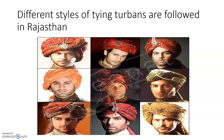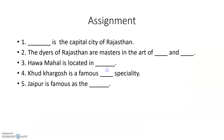Now, a small assignment for you. Dash is the capital city of Rajasthan. The dyers of Rajasthan are masters in the art of dash and dash. Hava Mahal is located in dash. Kud Khargosh is a famous dash speciality. Jaipur is famous as the dash. Some part is still remaining — we will continue in the next video to complete the chapter. Thank you, children. Bye.